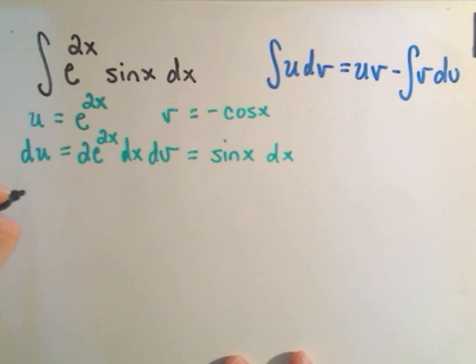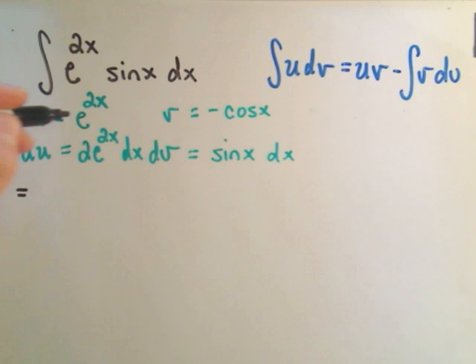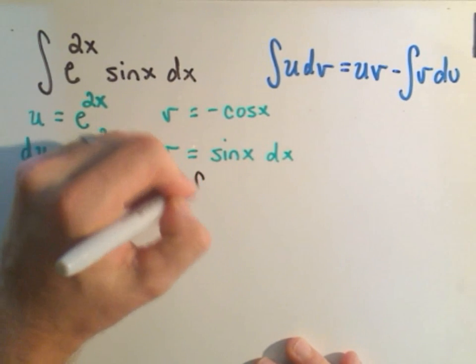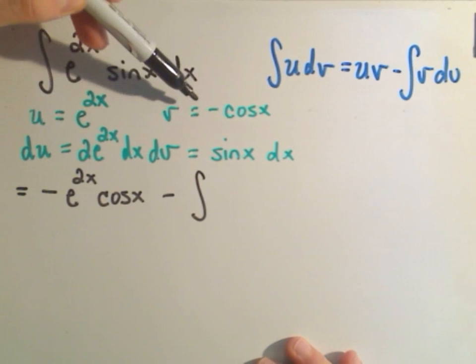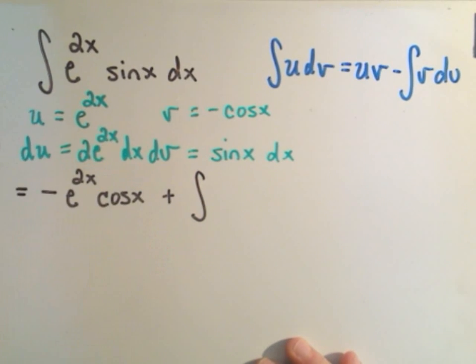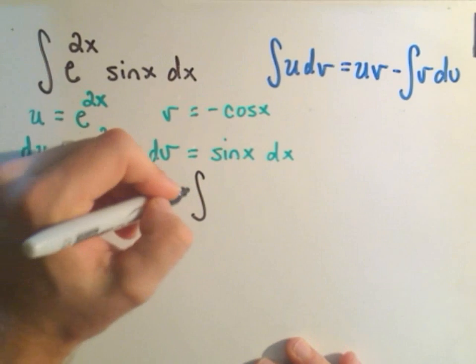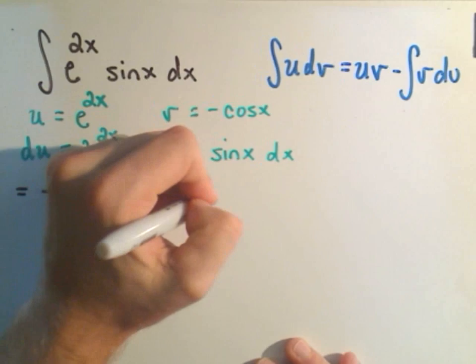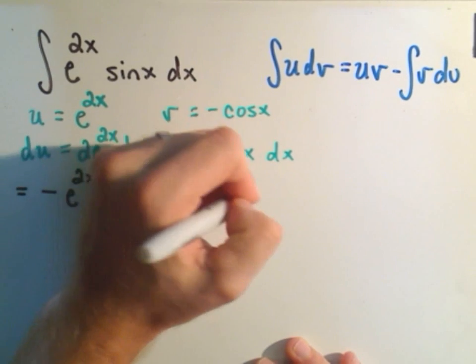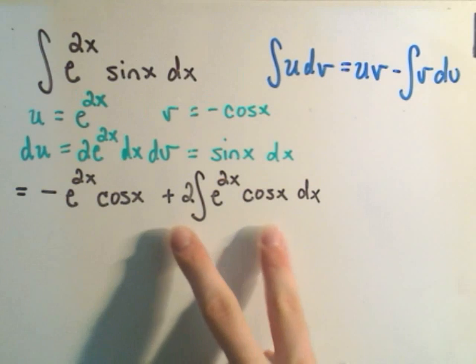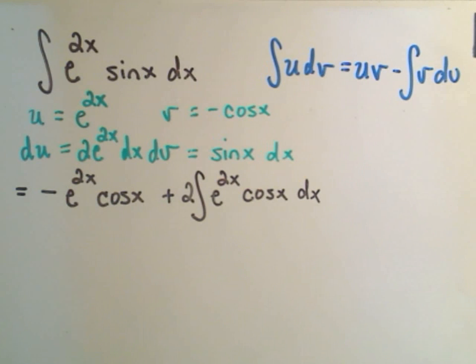All right, so it says if we integrate this, it says we're going to get u times v. So I'll write, I'll pull the negative out front, negative e to the 2x times cosine x minus the integral of v, which is negative cosine x. So if I pull the negative out front, so v du, I'm going to pull the 2 out front as well. And I'll be left with e to the 2x cosine x dx. Okay, so there's my v du stuff, kind of simplifying it all down at once.